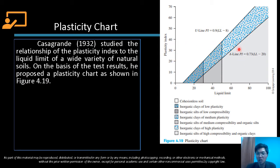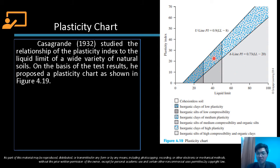Depending on which region the point falls in, that will be the classification of the soil according to the plasticity chart. This plasticity chart is divided into 6 regions, and in each region is written the classification of the soil for that area.